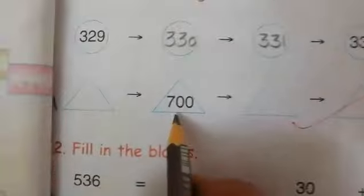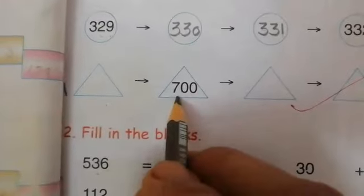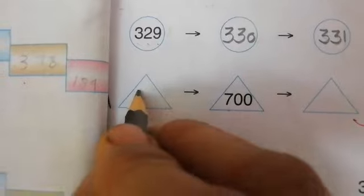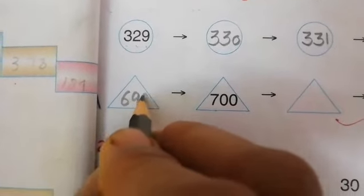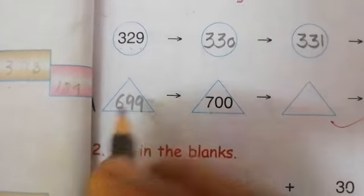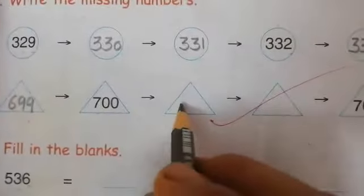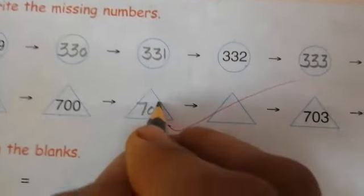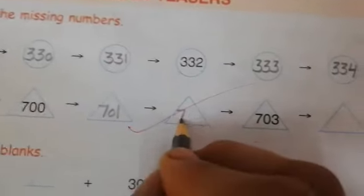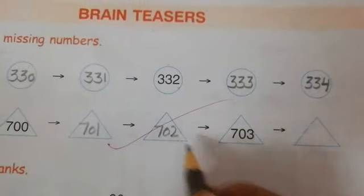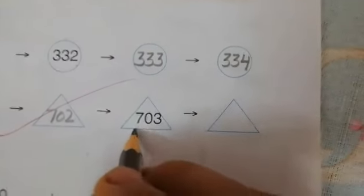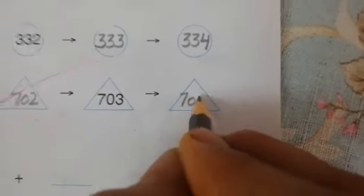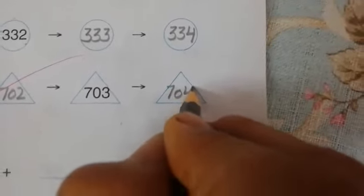Now read the number 700. Then what comes before 700? 699. 700. The next number is 701. 702. 703 is written here. The next number is 704.